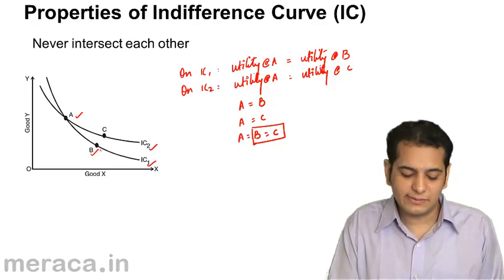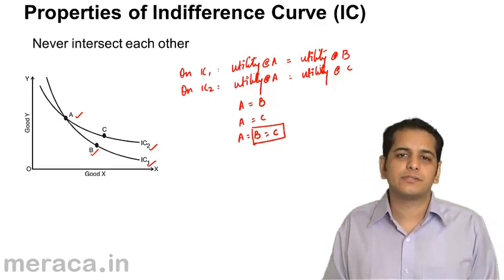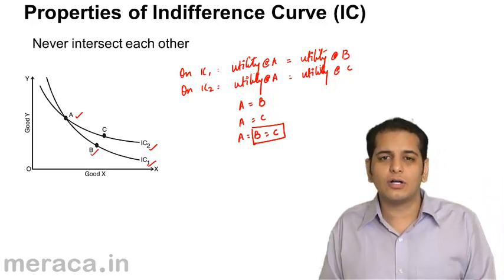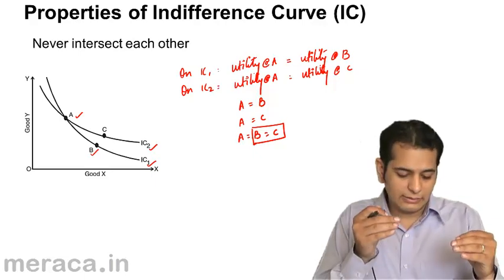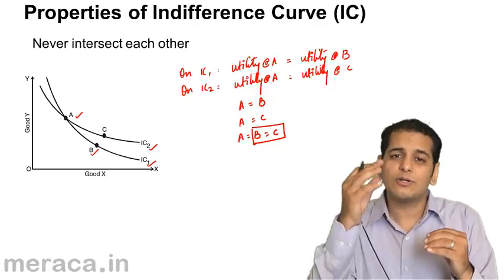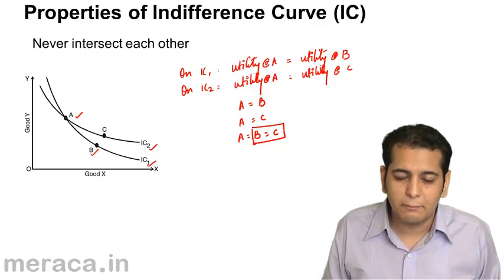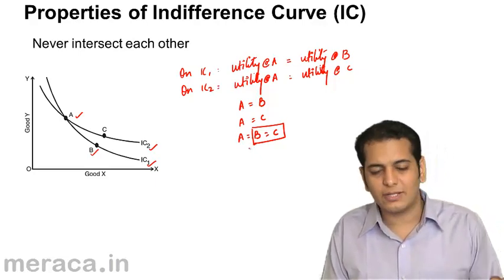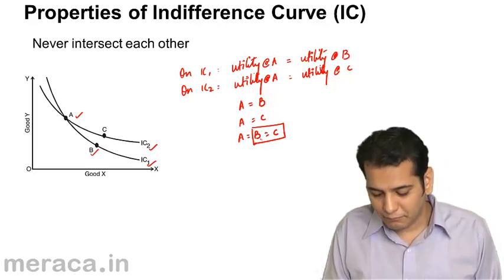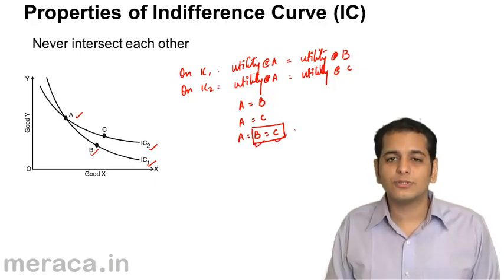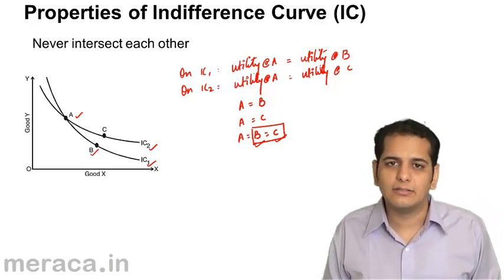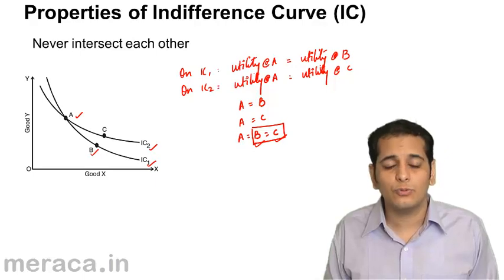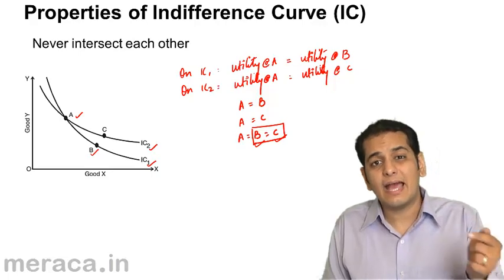But in the diagram, B and C are distinct points lying on different indifference curves, so their utility cannot be the same. C is on a higher indifference curve and must have a higher level of satisfaction, while B is on a lower one and gives lesser satisfaction. Since our assumption that the curves intersect leads to the incorrect conclusion that utility at B equals utility at C, we conclude that no two indifference curves can intersect each other.